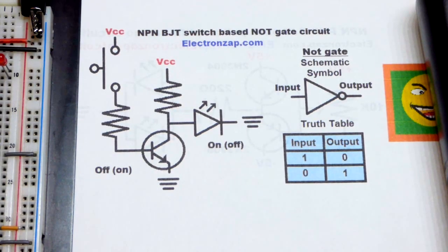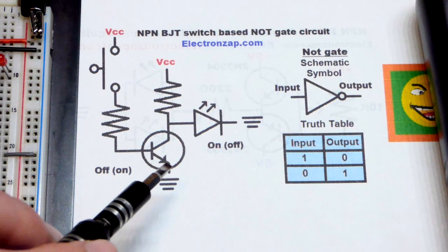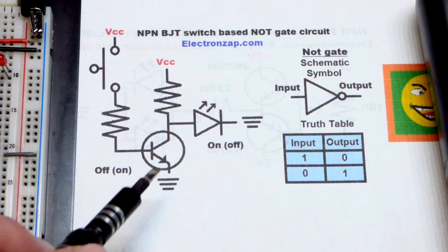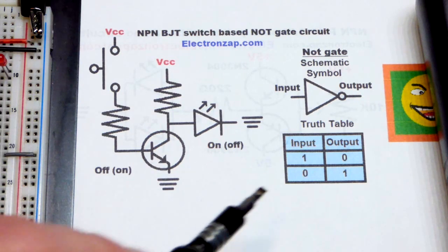So now in this video, we're going to quickly look at using a bipolar junction transistor, this is an NPN bipolar junction transistor, as a NOT gate or digital inverter.